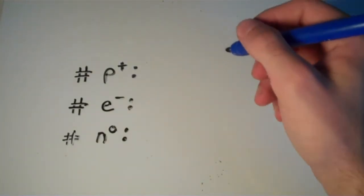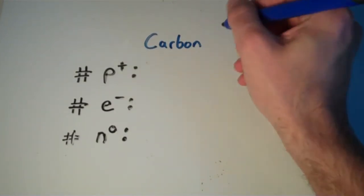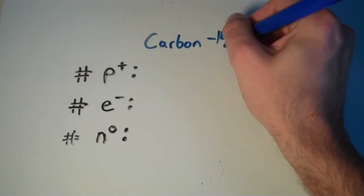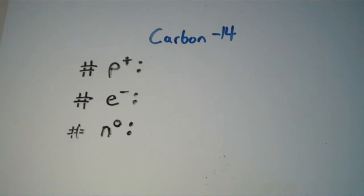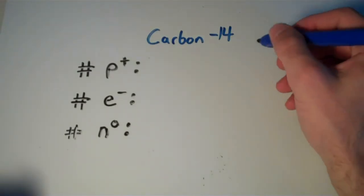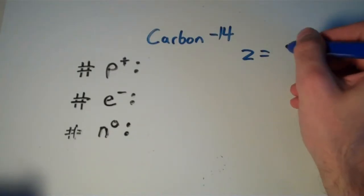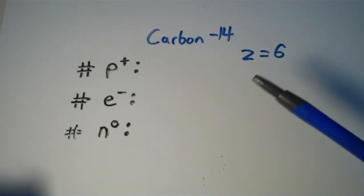Okay, how about carbon-14? So, how many protons, electrons, and neutrons are in carbon-14? Well, if you consult your periodic table, you'll find that carbon has an atomic number of 6. And no other element has an atomic number of 6, remember, because each element has its own unique atomic number.